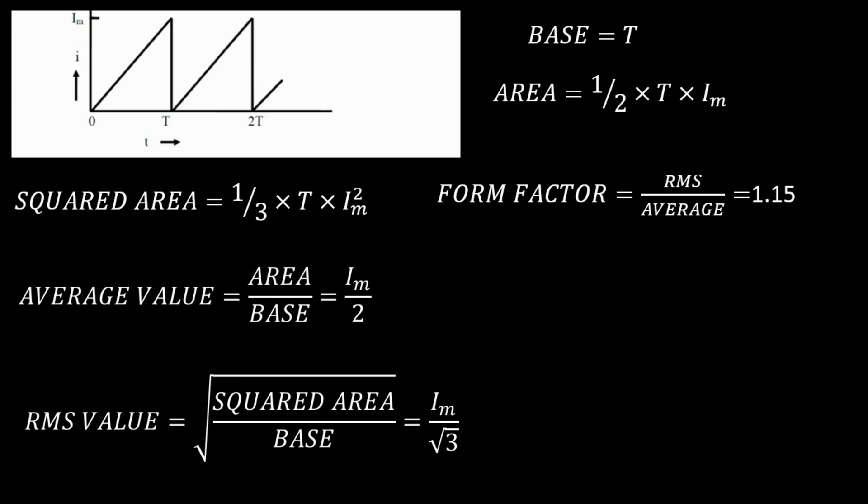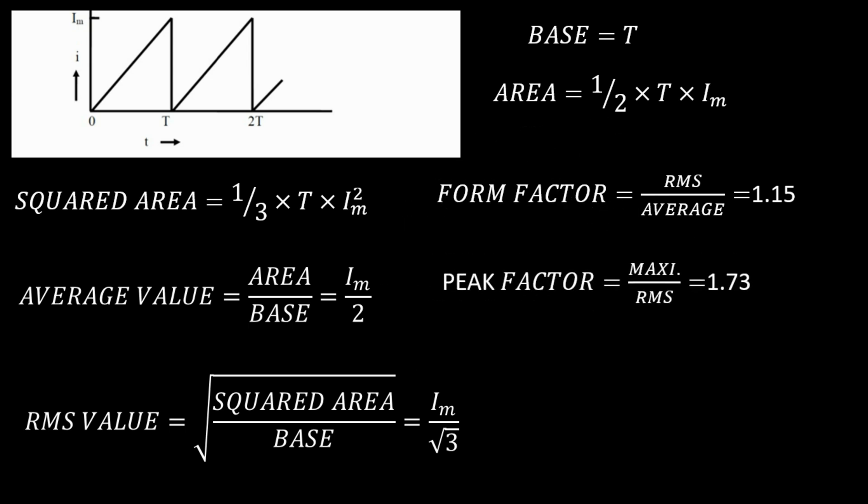Now we can calculate the form factor, which is RMS value divided by average value. Dividing Im over root 3 by Im over 2, we get 1.15. Peak factor is maximum value divided by RMS value. The maximum value is Im, divided by the RMS value Im over root 3, giving root 3, that is 1.73.